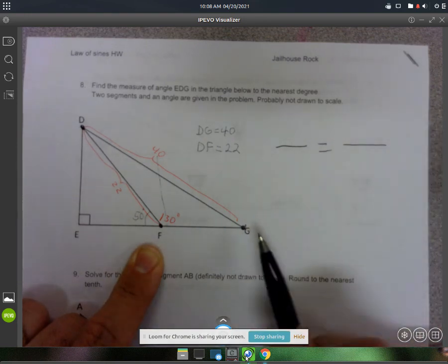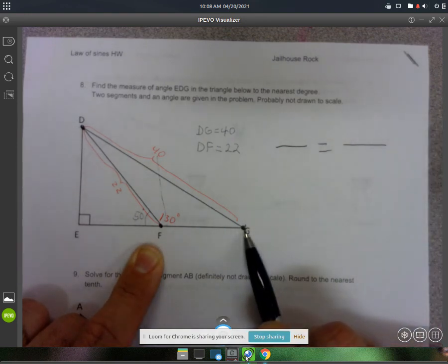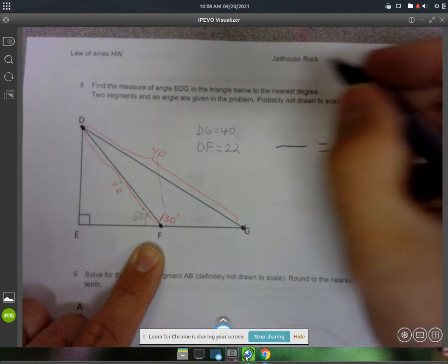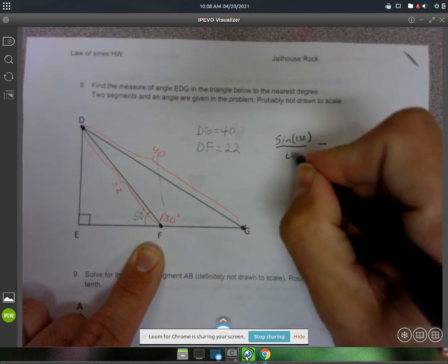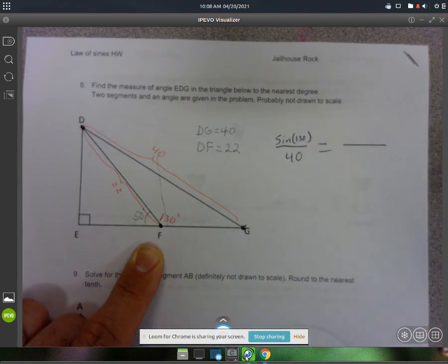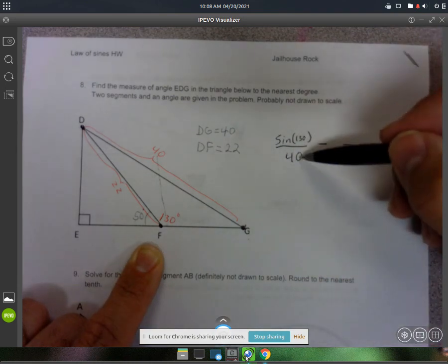And the one I'm going to solve for here is angle G. All right, so what I'm going to do is I'm going to say sine of 130 is to 40. So that's my true one, the one I know.